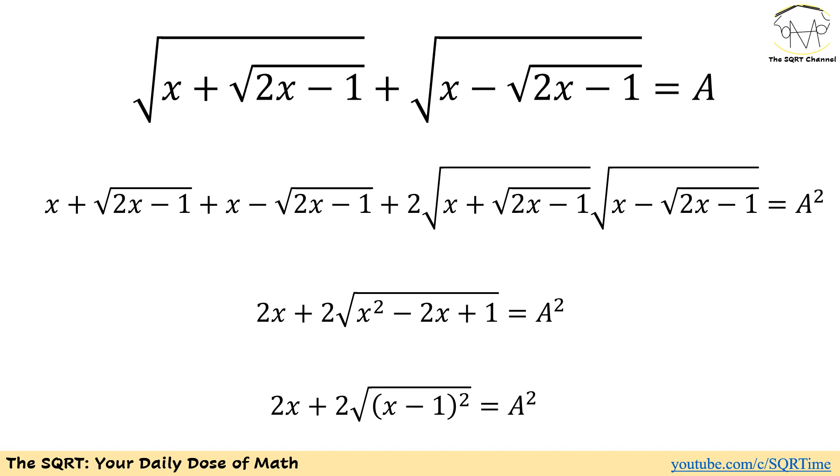With that, let's take power of 2 of both sides and then we are going to end up with x plus radical 2x minus 1 for the first term, x minus radical 2x minus 1 for the second term, and then 2 times multiplication of both of these terms. And if we add them together, we are going to end up with A squared.